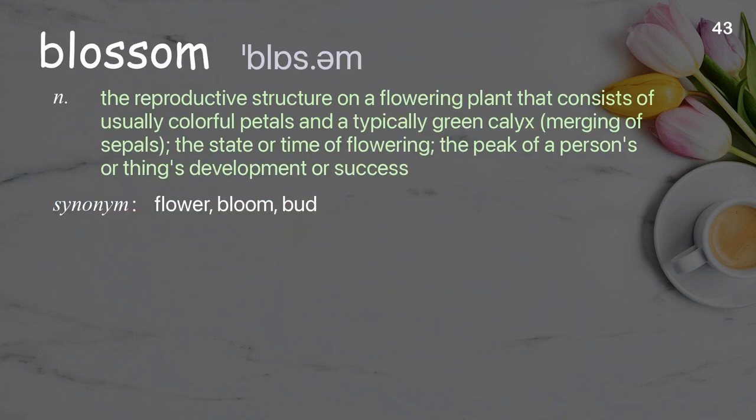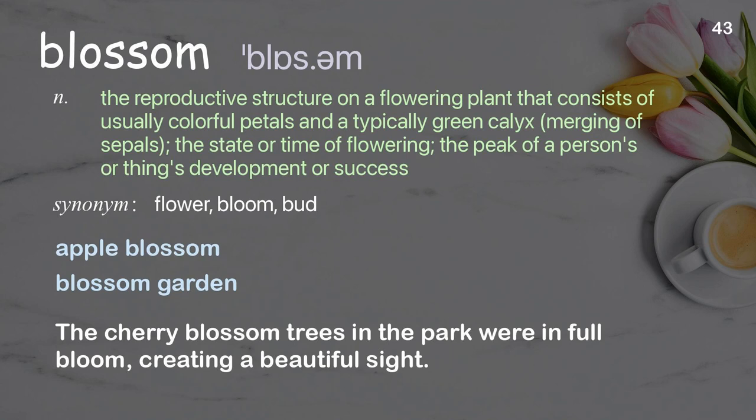Blossom: the reproductive structure on a flowering plant that consists of usually colorful petals and a typically green calyx merging of sepals; the state or time of flowering; the peak of a person's or thing's development or success. Examples: Apple blossom. The cherry blossom trees in the park were in full bloom, creating a beautiful sight.